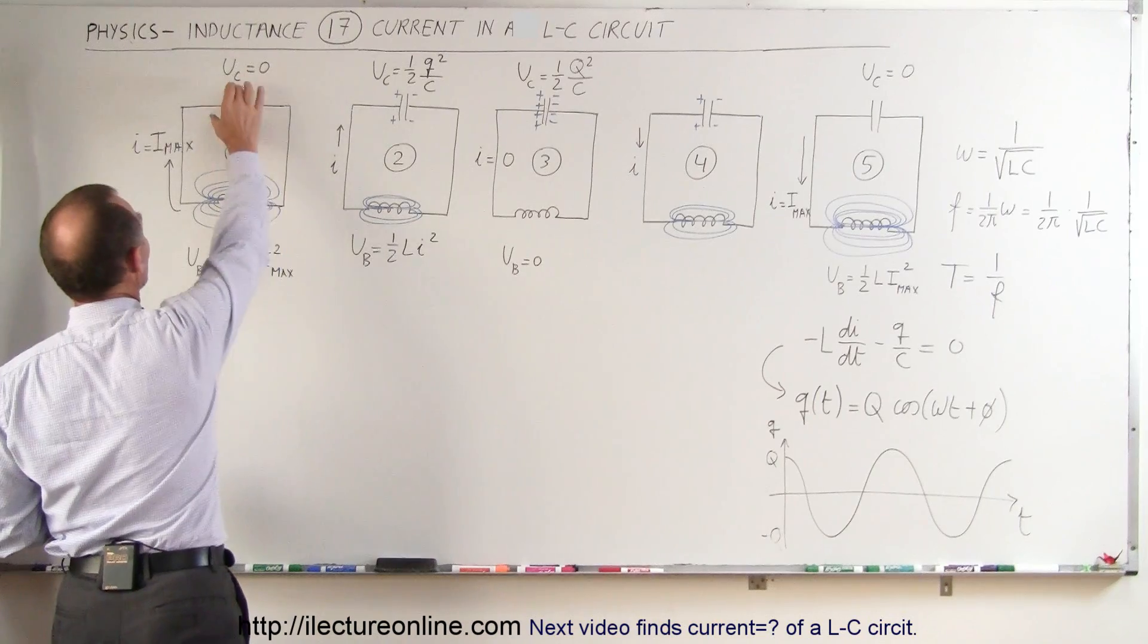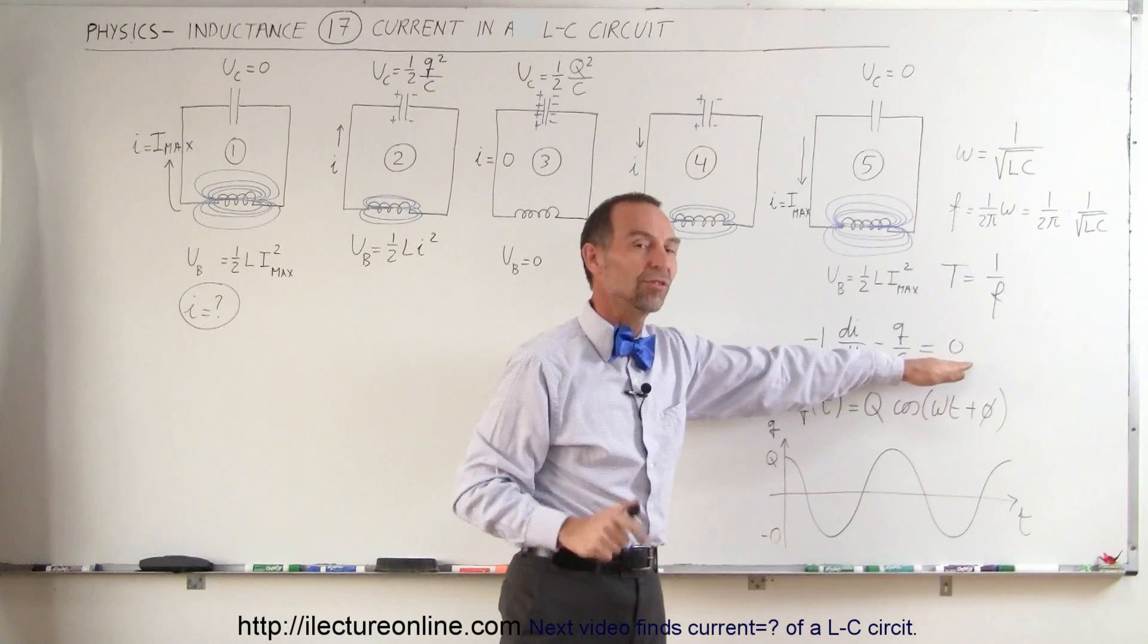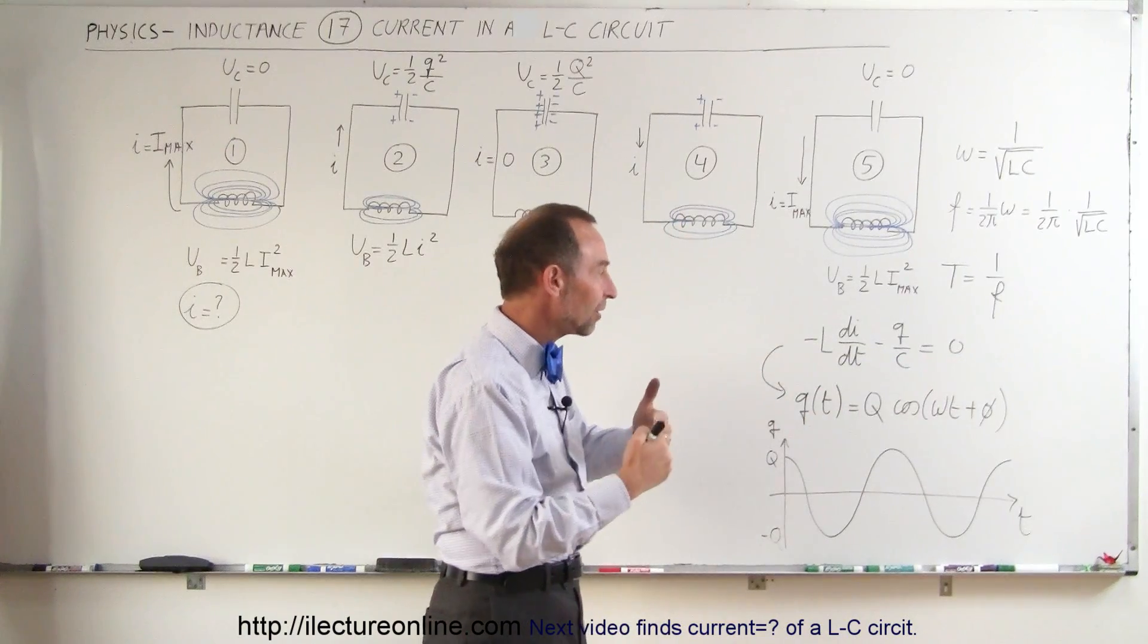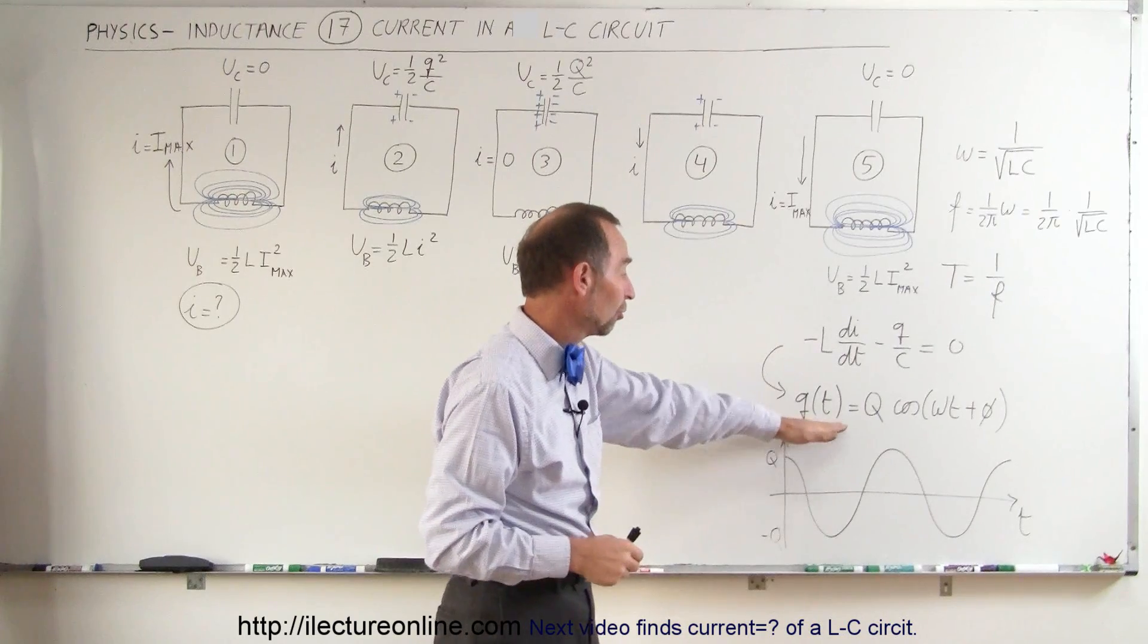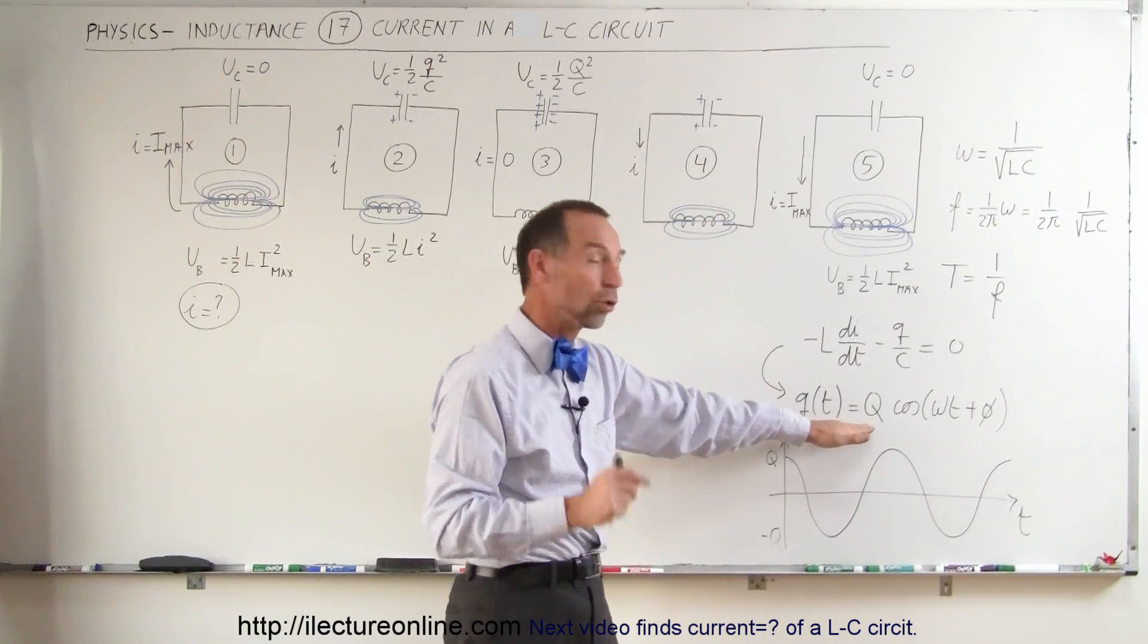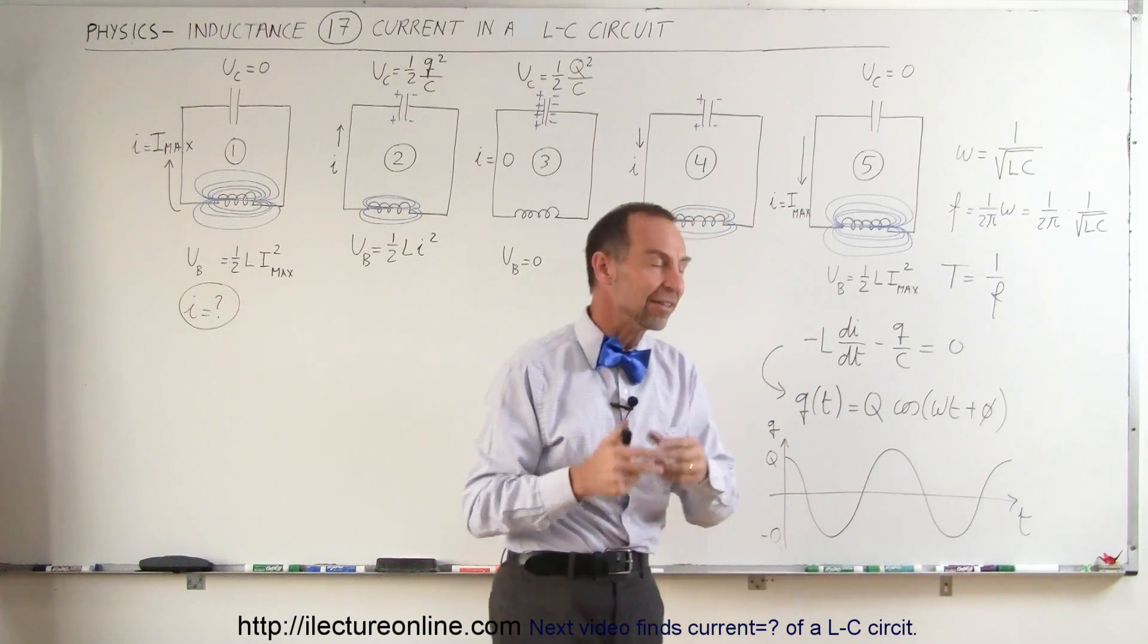We had an inductor, we had a capacitor. We add up the voltage across the two devices and we know that always adds up to zero. When we solved that equation we found we had a second order differential equation for which the solution was that the charge was equal to the total charge in the capacitor when it's fully charged times the cosine of omega t plus a phase angle.